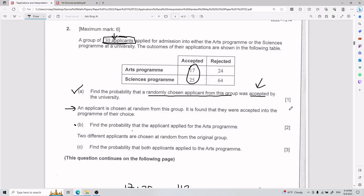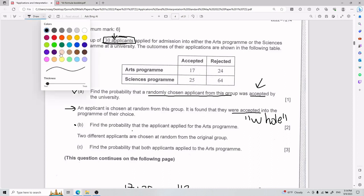And so initially, we had an applicant that is chosen from the group for part A and was accepted. Here, we have that someone was chosen from the group, and they were also accepted. And we need to find the probability that of these guys that were accepted, they applied to the arts program. So I'm going to say that again. Be very careful about what I'm saying. The guys that we're looking for, my new whole, it's not the 130.